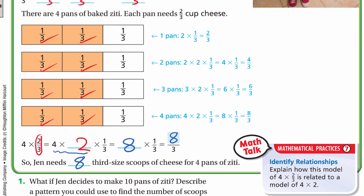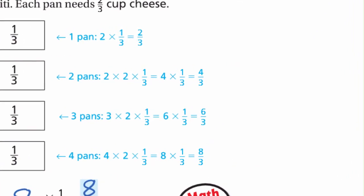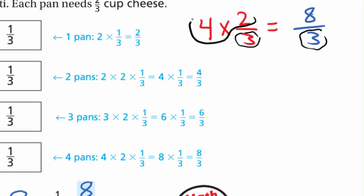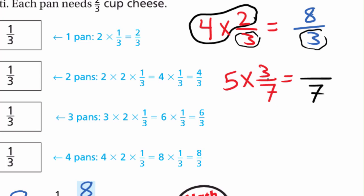We can make this really quick. We have 4 × 2/3 and we got 8/3. Notice the denominator doesn't change. We got 8 in the product, which is the product of 4 and 2. So 4 × 2 = 8, and we keep the denominator 3. For example, 5 × 3/7: we keep the 7 in the denominator and multiply 3 × 5 = 15, so we get 15/7.